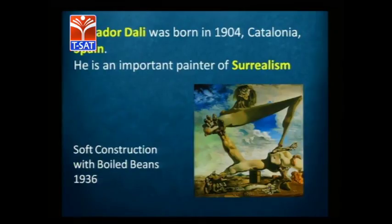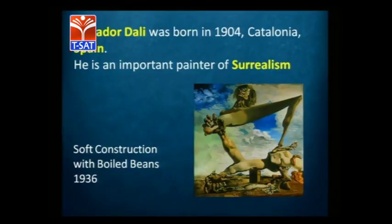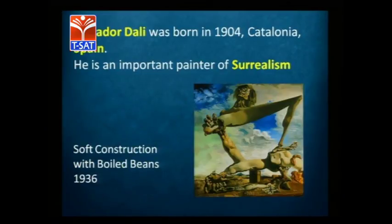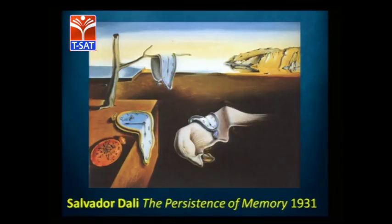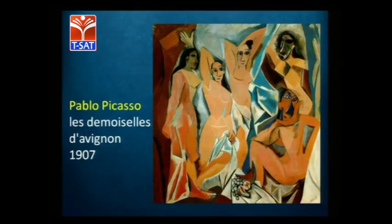Another name in the syllabus is Salvador Dali. Dali was a Surrealist painter, born in Catalonia, Spain, in 1904. The painting Soft Construction with Boiled Beans is one example. Surrealism deals with psychic realism — psychology and dreams. The most famous painting of Dali is The Persistence of Memory, which he painted after a dream.